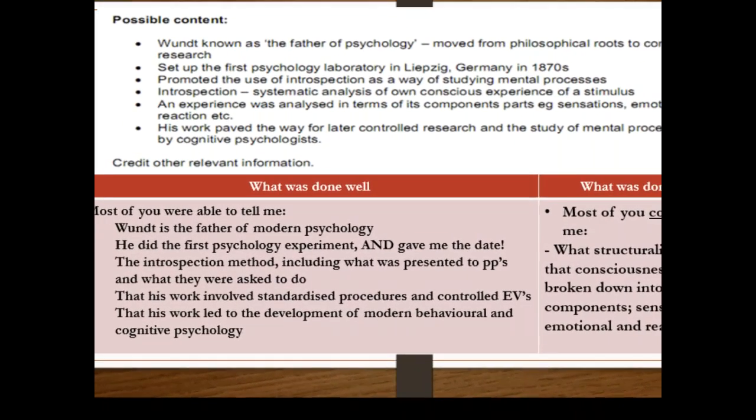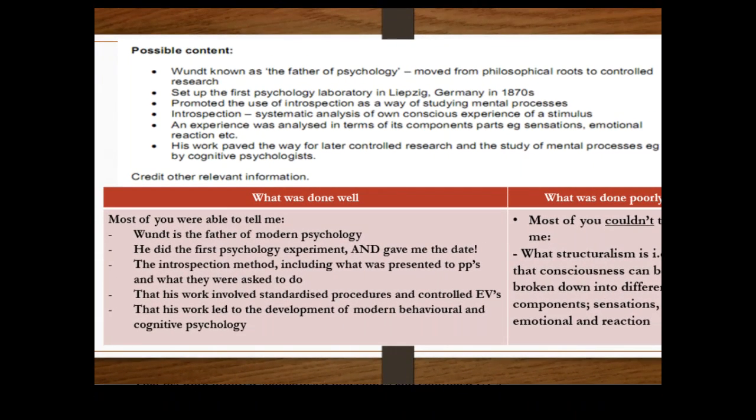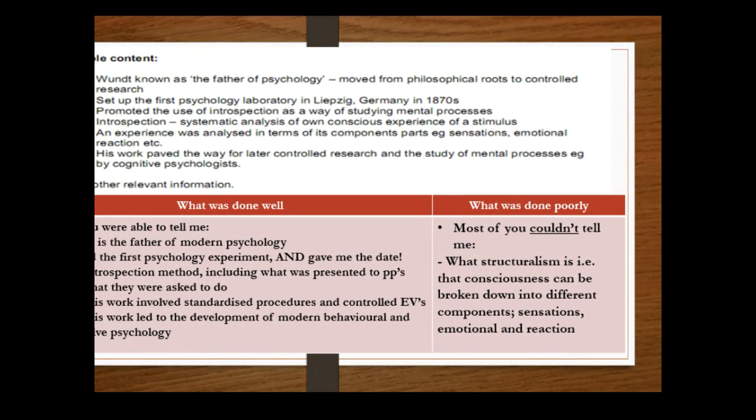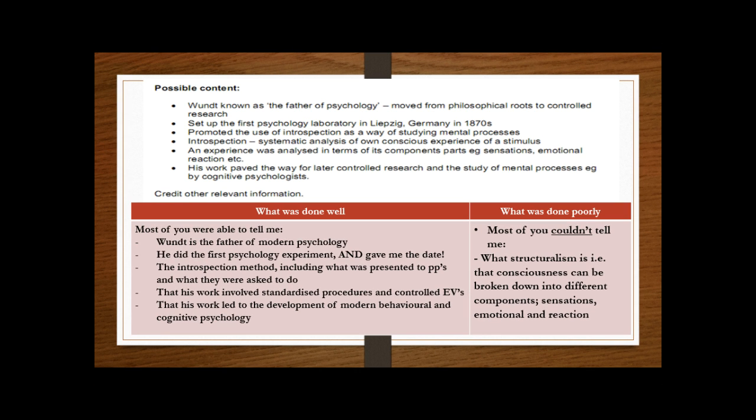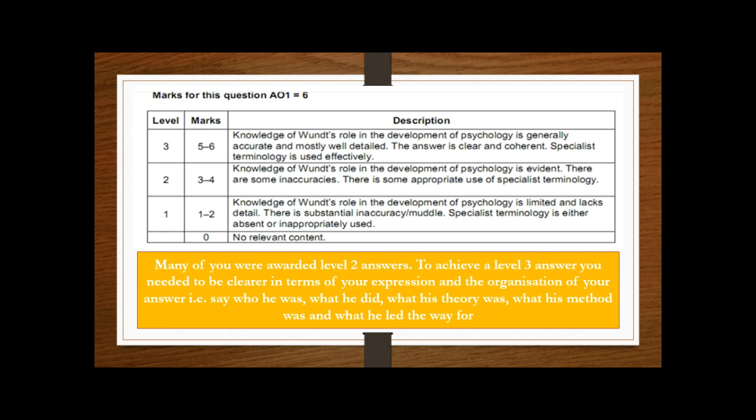What was done well: most of you were able to tell me that he was the father of psychology, did the first experiment, and you gave me the proper date rather than just say 1870s. Introspection, and most of you told me what that involved. You also said that his work involved standardized procedures and controlled extraneous variables, which we'd never seen before, and that that had led to the development of behavioral and cognitive psychology. Some of you who dropped marks on this just couldn't tell me really what structuralism was. In order to get your six out of six, you really needed to have an understanding of where introspection was grounded—what was his theory first and then how did he investigate it.